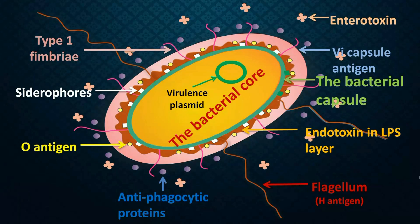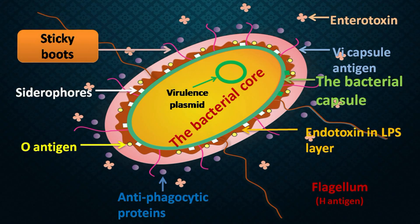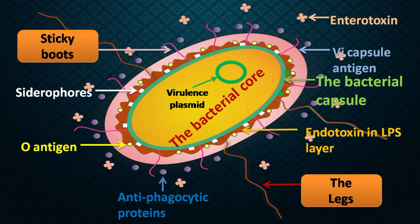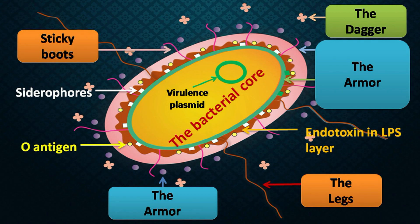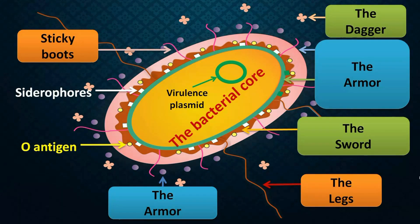If you have understood the micro-anatomy of this E. coli and you translate this into the model of an invader: the fimbria on the bacterial surface are like sticky boots which allow the bacteria to gain a foothold on the slippery umbrella cells. The fimbria are also like legs which give tubular motility to swim inside the urinary bladder. The capsule is like an armor. The enterotoxin thrown in the bladder is like a dagger, and the endotoxin — which is very powerful — is like a sword.